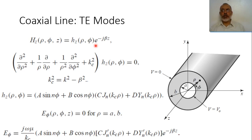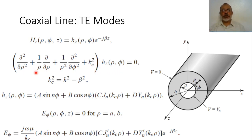Helmholtz's wave equation in cylindrical coordinates is: (partial²/partial rho²) + (1/rho)(partial/partial rho) + (1/rho²)(partial²/partial phi²) + kc² times hz(rho, phi) equals zero. This is exactly the same wave equation as for the cylindrical or circular waveguide. Here, kc² equals k² minus beta².